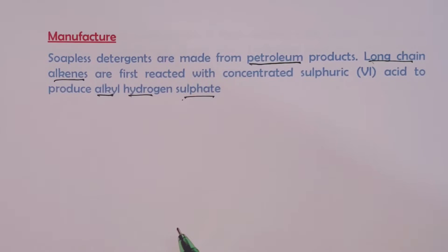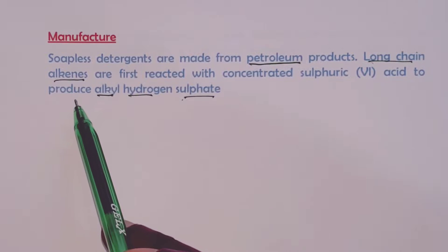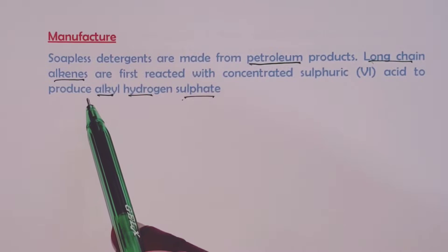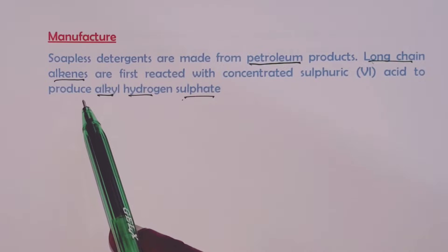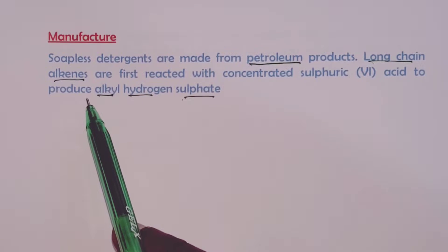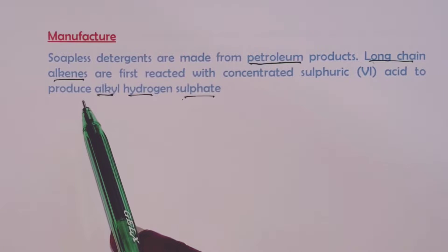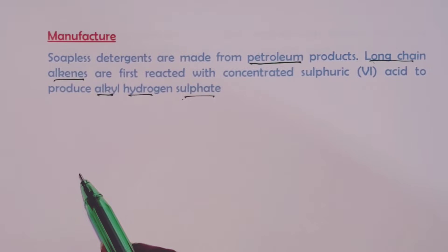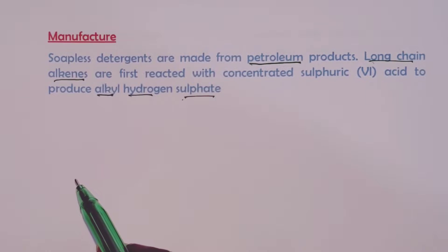Now at this point, somebody may wonder why we go for long-chain alkenes. This is because we don't want our soapless detergent to be very soluble in water. If we make the chain shorter than maybe 15 carbons in the chain, then our soapless detergent would be too soluble in water. So the longer the chain, the better for our soapless detergent.